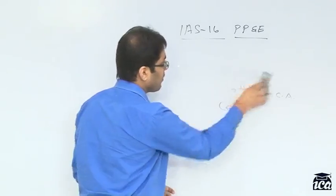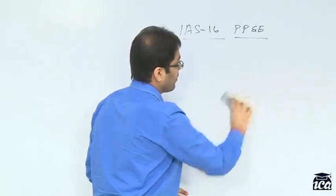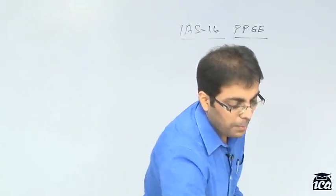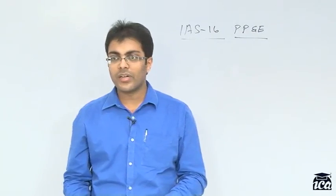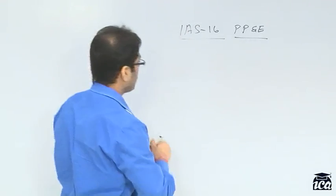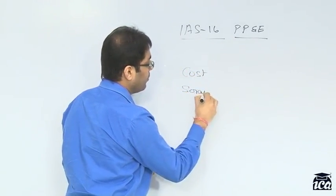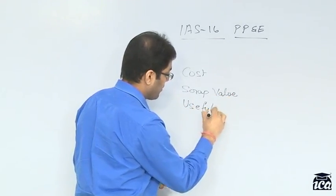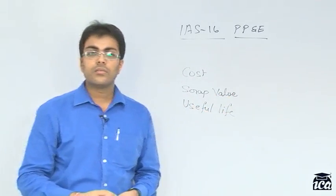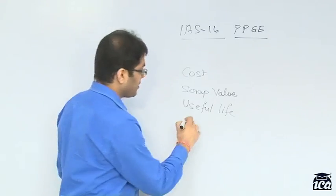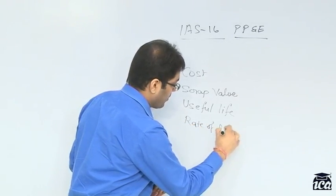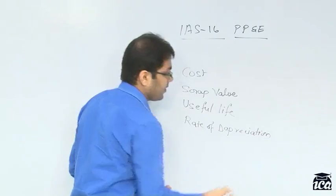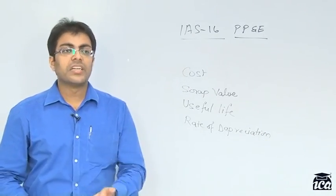We will now move on to depreciation. Under depreciation, there is not much difference compared to the Indian context. The key components required to calculate depreciation are: cost of the asset, scrap value, useful life of the asset, and the rate of depreciation in case of the written-down value method.